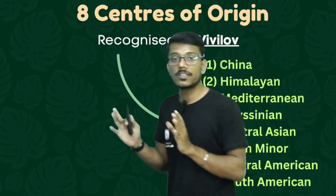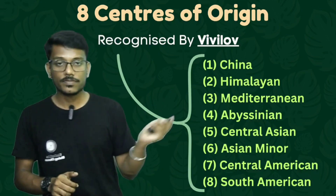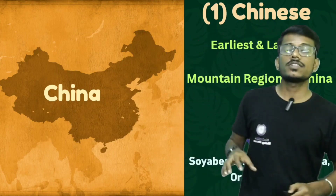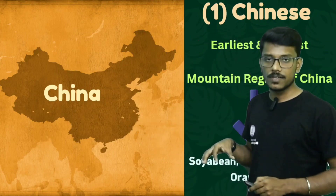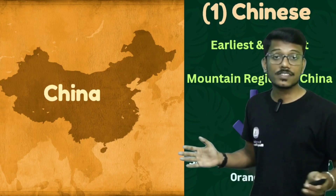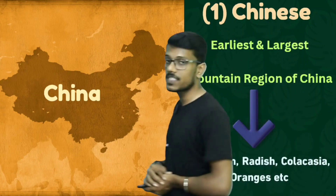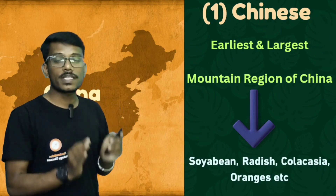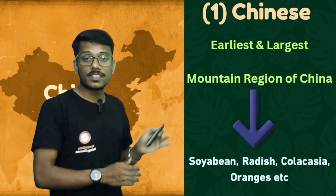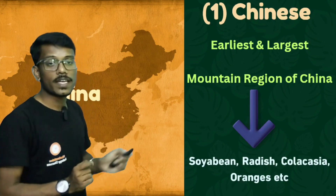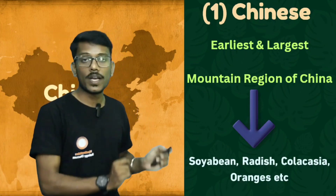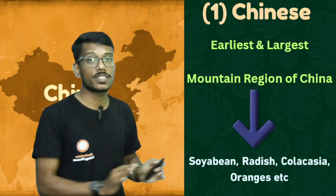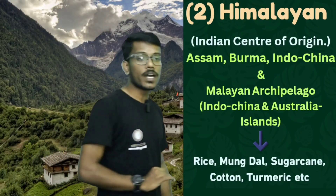Let's discuss the Chinese center of origin. The China area — the mountain region — is considered the earliest and largest center of origin. From the mountain region and hills of China, crop plants like radish, colocasia, orange, and Chinese tea originated. These are the crop plants from the Chinese center of origin.